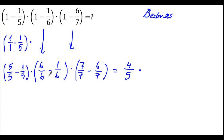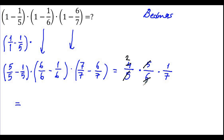Now we have 4 over 5 times 5 over 6 times 1 over 7. We can do simplification: 5 and 5 cancel out, and 4 over 6 simplifies to 2 over 3 by dividing both by 2. So we get 2 times 1 over 3 times 7, which is 2 over 21. That's our answer.